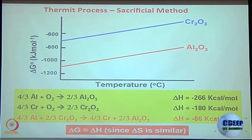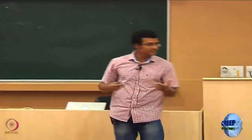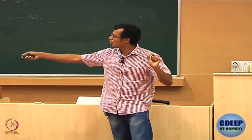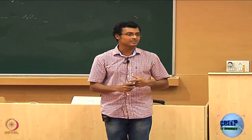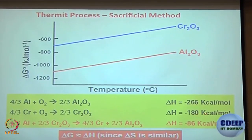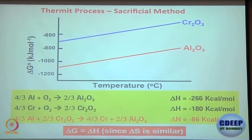Since nothing is changing in terms of state — solid, liquid, gas — or overall stoichiometry, when thinking about delta G for the whole reaction, the only thing you need to worry about is delta H, because delta S is going to be similar. So delta G equals delta H minus T delta S, and the T delta S term you can essentially cancel. If delta G for this reaction is minus 266 and delta H is minus 180, overall delta G is going to be minus 86 kcal/mol.